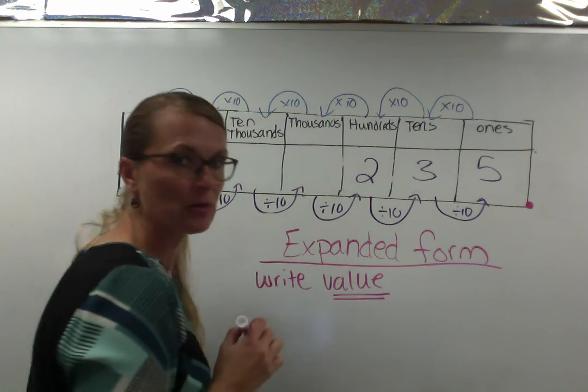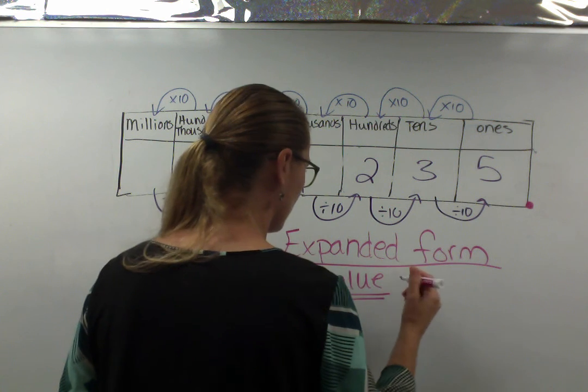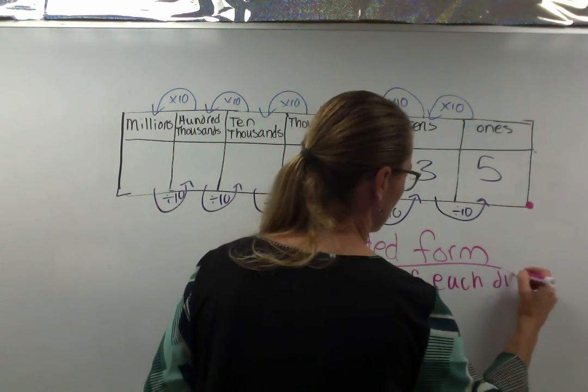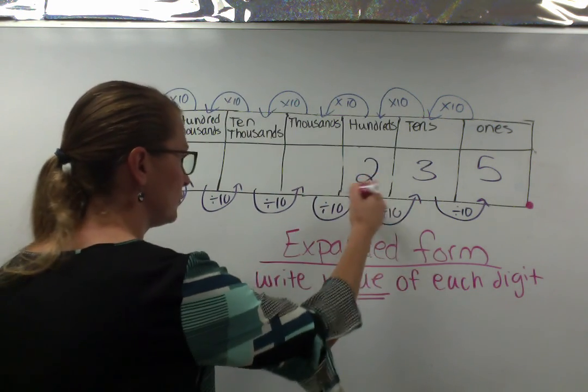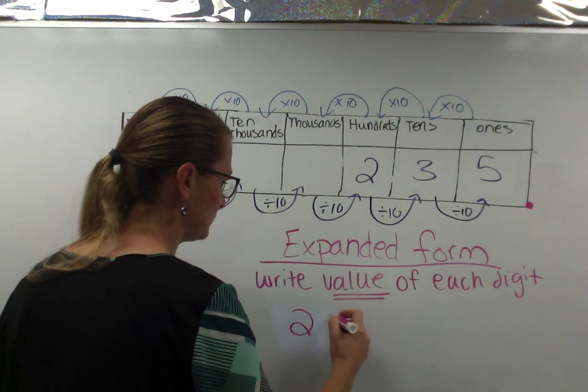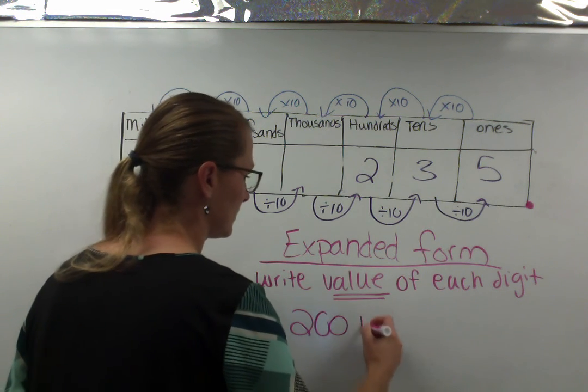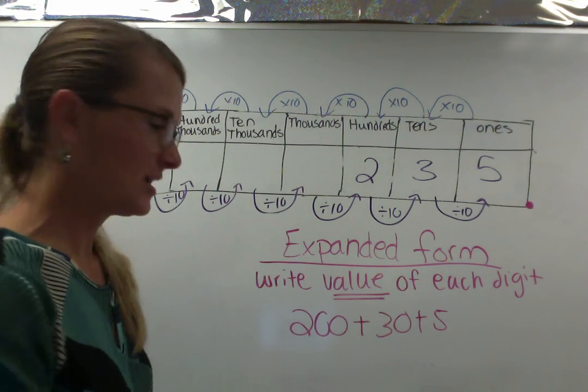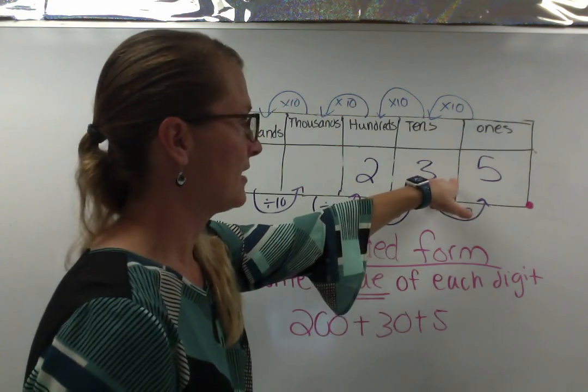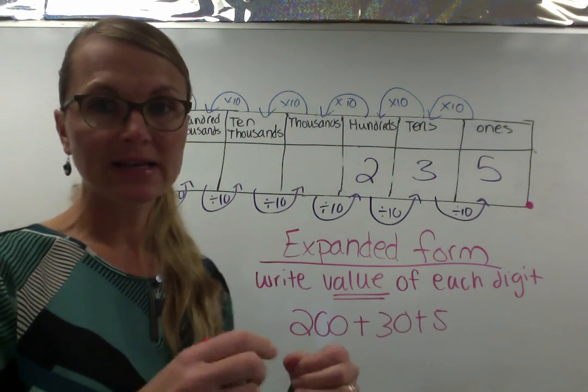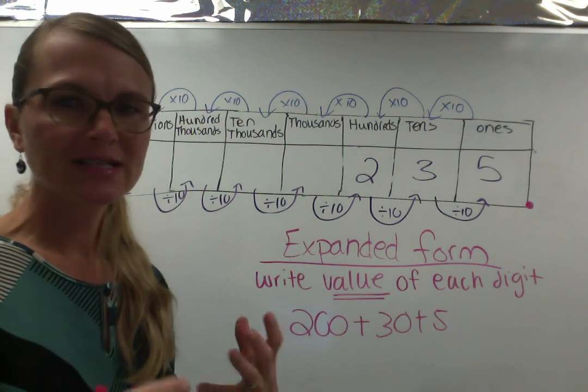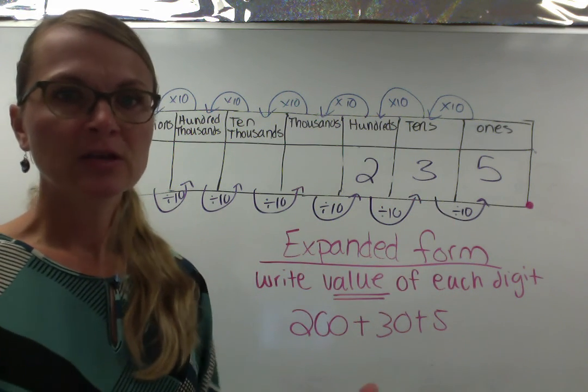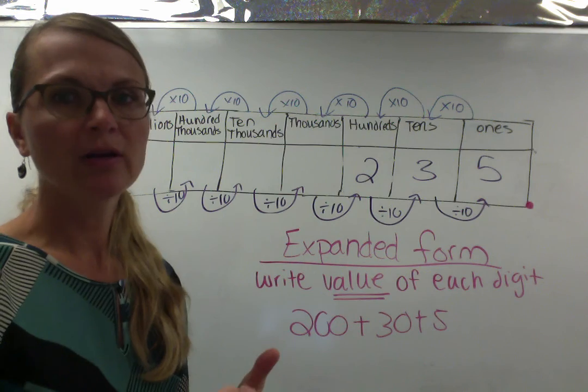And this is why we talked a lot about the value of a digit the other day. So the two is in the hundredth place. So you guys have done 200, right? Plus 30 plus five. And the reason that we put pluses in between is because we need to put these numbers back together again to make 235. So expanded, we talked about taking numbers apart before. So this is kind of the same idea. With the expanded form, you take something that's built, and you pull it apart into its pieces. So 235 is made of the pieces 200, 30, and 5. So we pull apart those pieces.